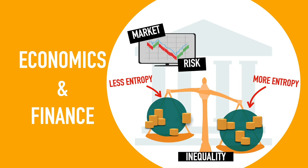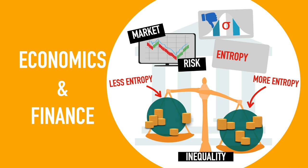In finance, the traditional measure of risk is the standard deviation, which assumes that the return on investment is normally distributed. This is unfortunately not always the case. Entropy is a better measure of risk because it considers all possible outcomes, not just those that fit a normal distribution.